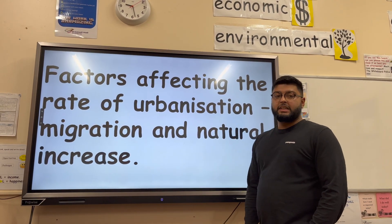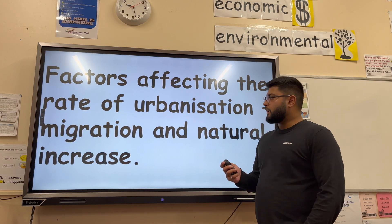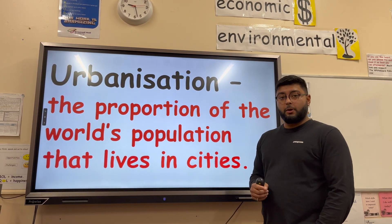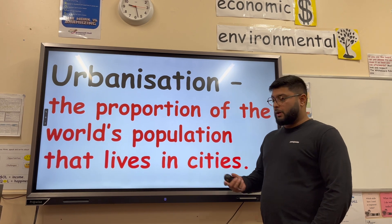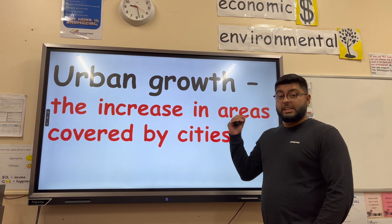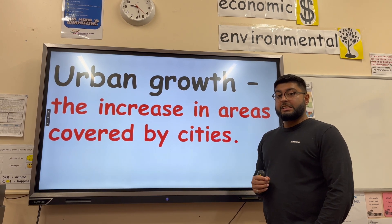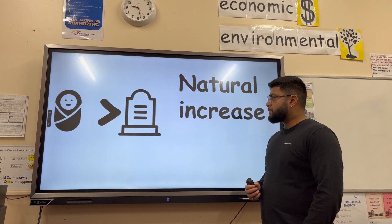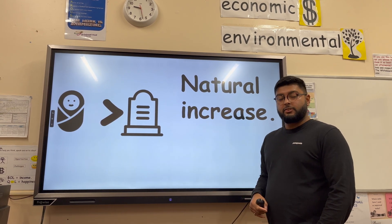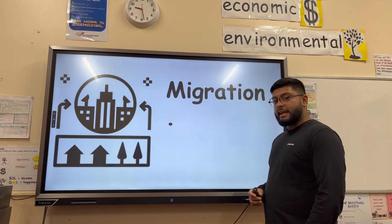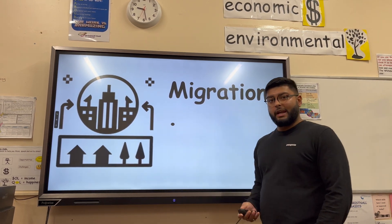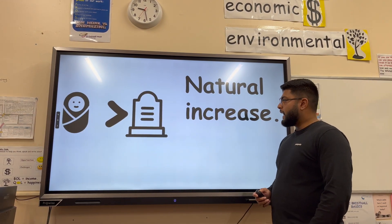The factors affecting the rate of urbanisation around the world. Urbanisation is the proportion of the world's population that live in cities — globally about 50%. Urban growth is the increase in space covered by cities, which is close to urban sprawl. Natural increase is when the birth rate is higher than the death rate, leading to population increase. Migration is usually from rural areas to urban areas to improve quality of life and standard of living.